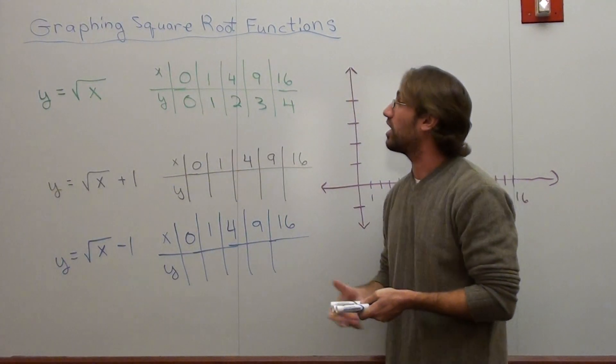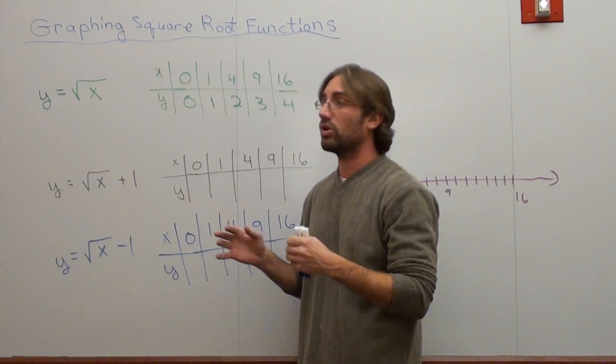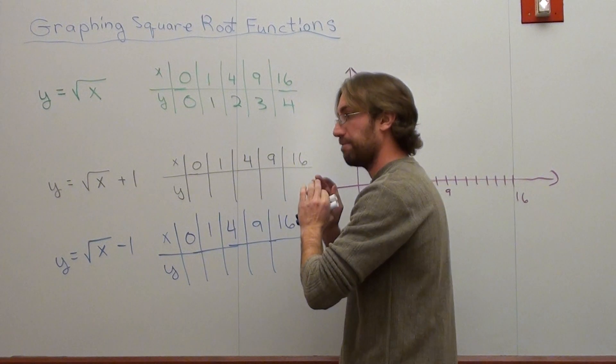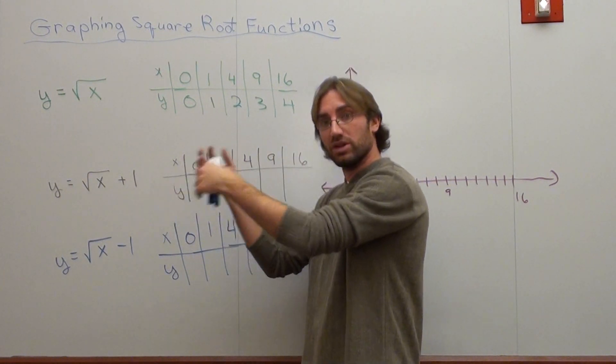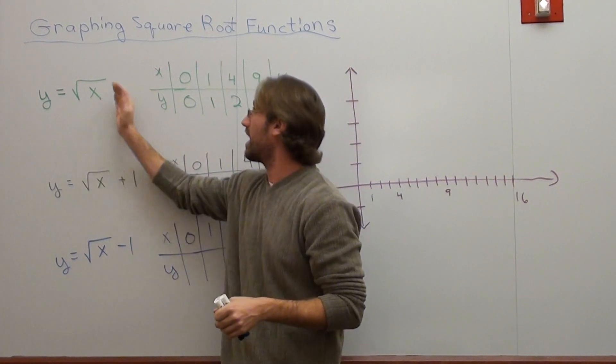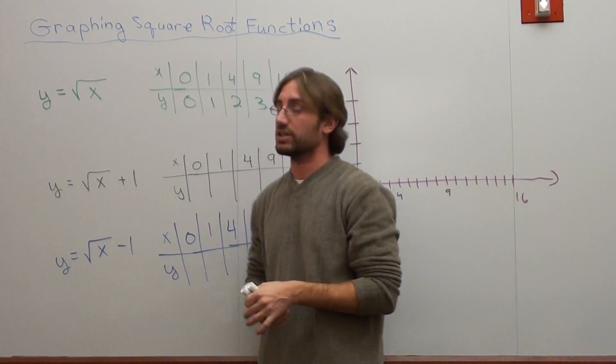Hello again. We're graphing the square root function, square root equation. On the last lesson, we learned where a graph starts on the x-axis, whether it's shifted to the left or shifted to the right, by simply taking the opposite value inside the square root and dividing by the number in front of x.